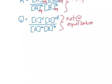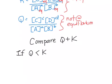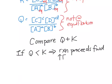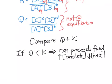We can compare Q and K to determine which way our reaction will shift. If Q is smaller than K, our reaction is going to proceed forward, meaning the concentration of our products will go up and the concentration of our reactants will go down. This is because Q less than K means we have too many reactants and not enough products.